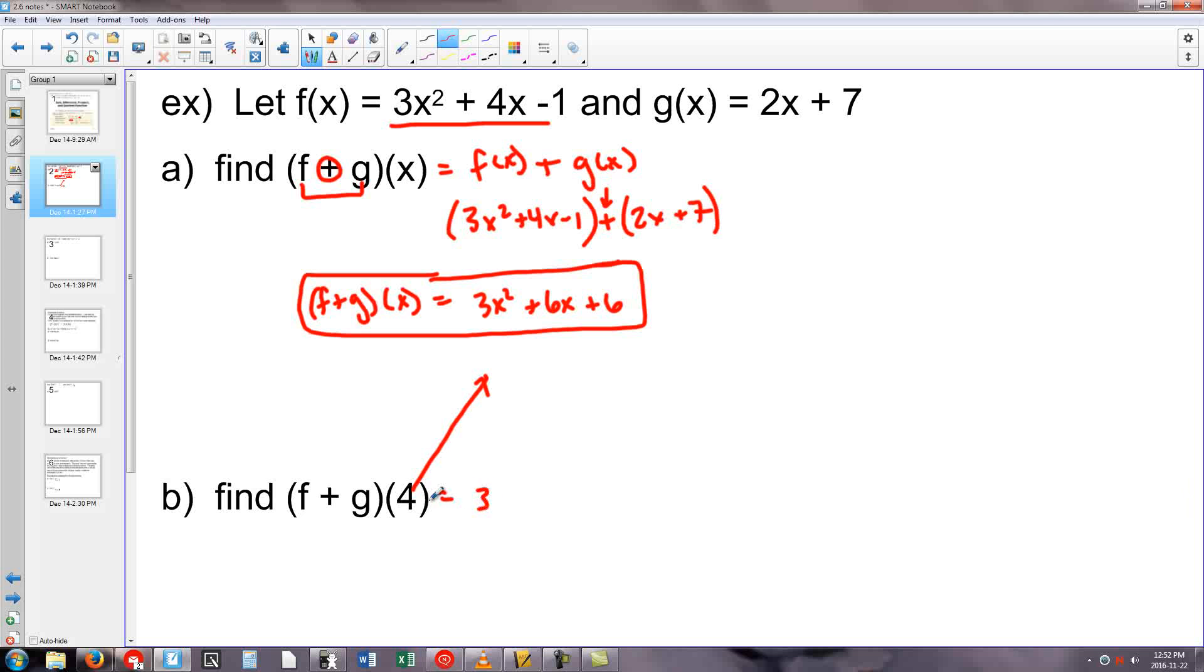Now what we're able to do is plug in different values for x into this equation and find out the result. I'm going to plug 4 in for x. So 3 times 4 squared plus 6 times 4 plus 6. 4 squared is 16, 3 times that is 48 plus 24 plus 6. These two make 30, 30 plus 48 is 78.